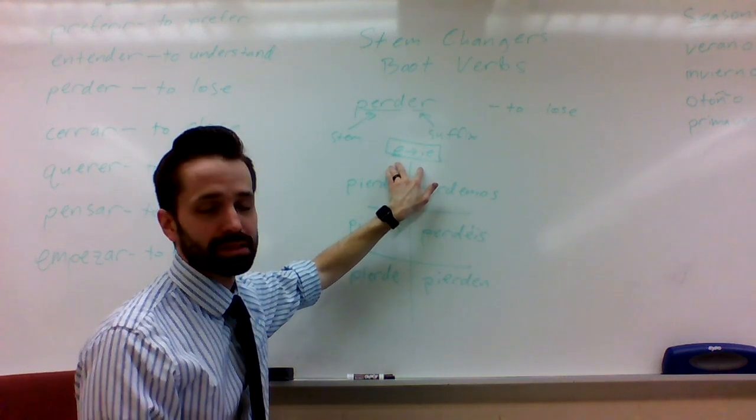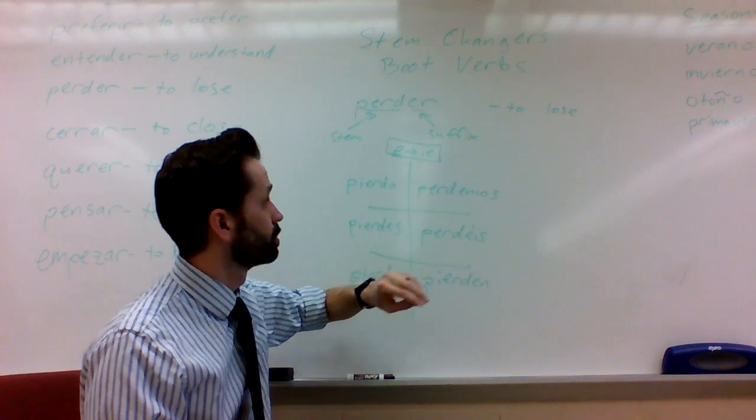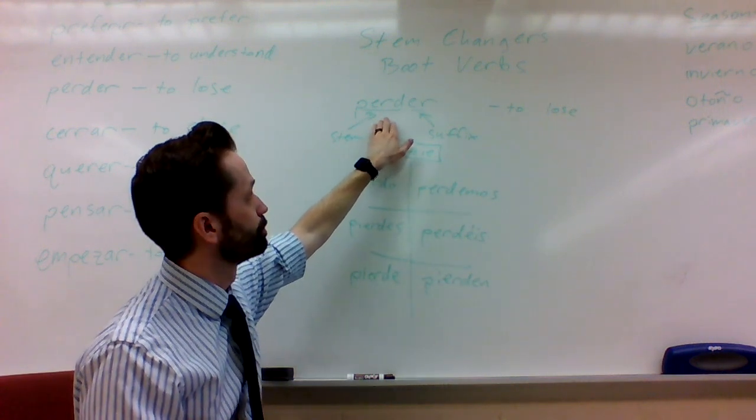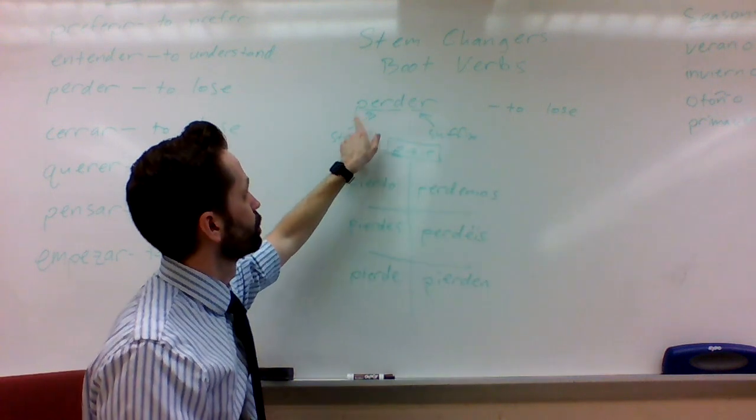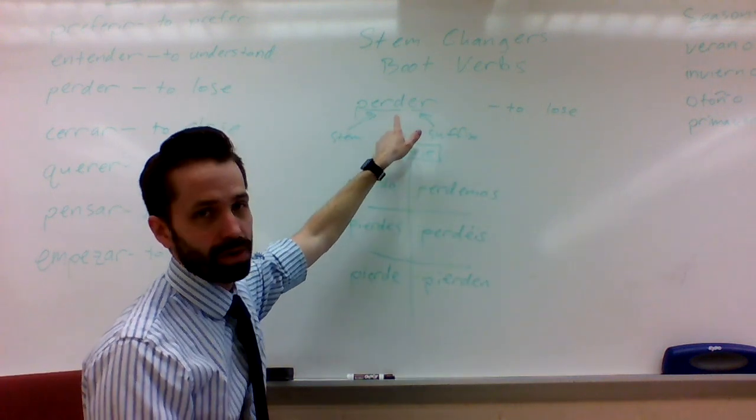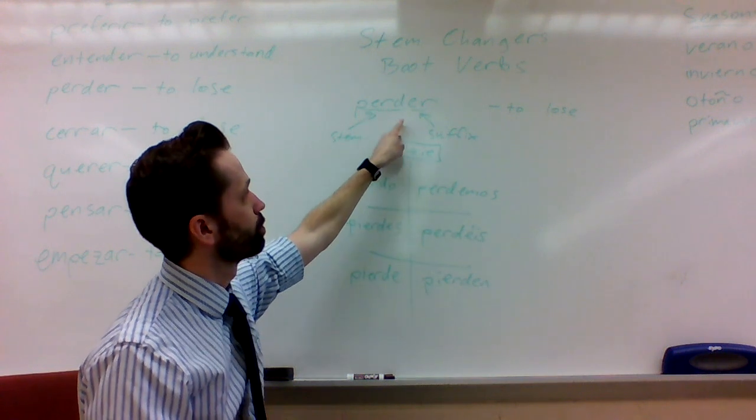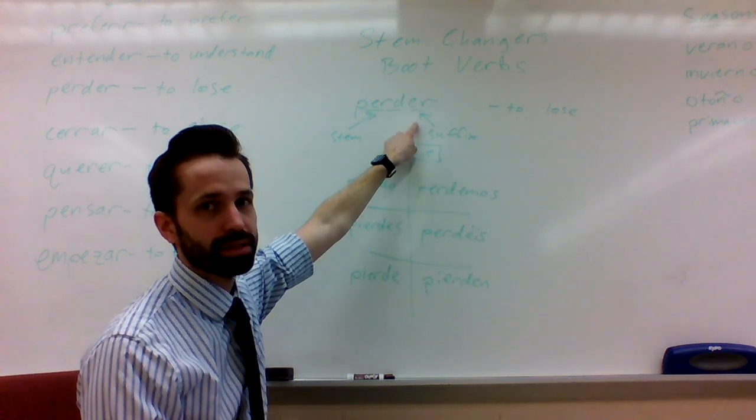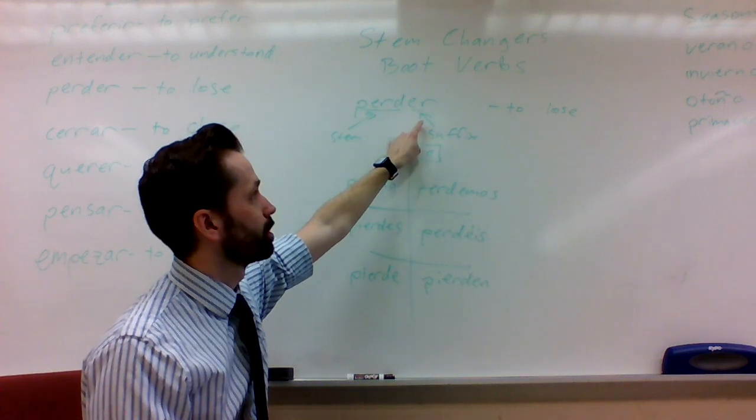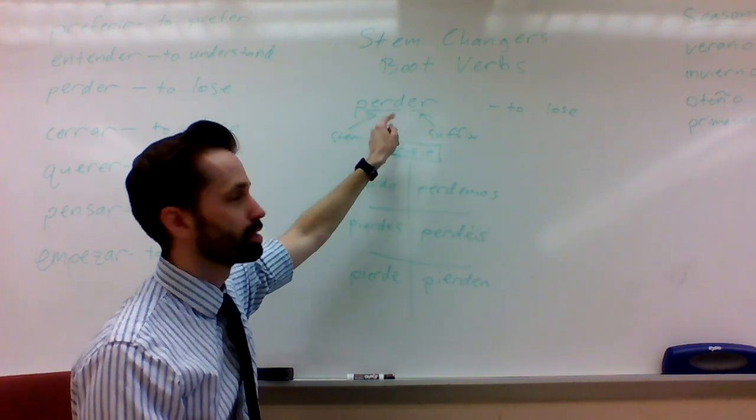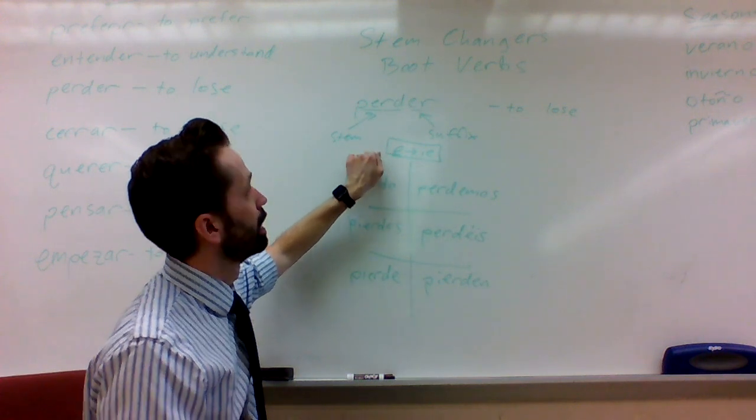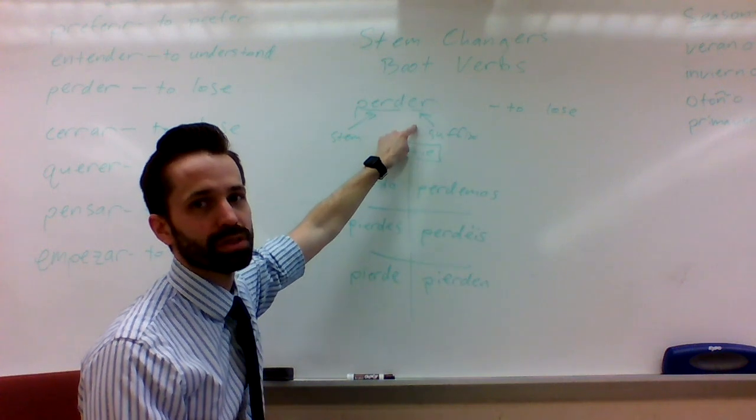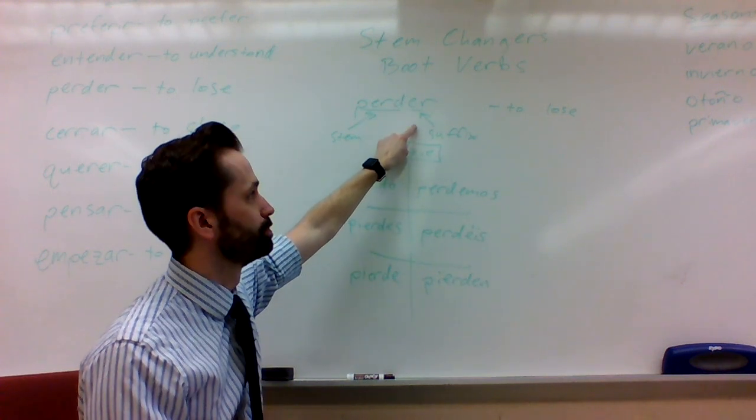The important thing to notice is that in a verb, there are two parts. The first part of the verb, so if we have this verb perder, which means to lose, the first part of the word is called the stem. It's the part all the way up to the last two letters when it's unconjugated. There's always an AR, ER, or IR on the end. That's called the suffix. Everything before that is called the stem. So these are called stem-changers. That means that in this stem, something is changing, when usually we only change the end of the verb.